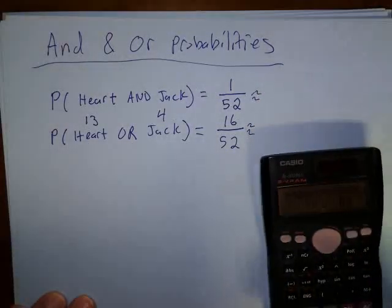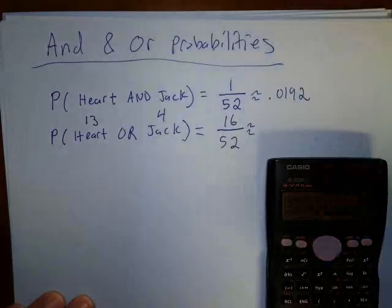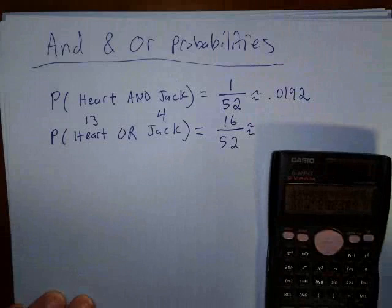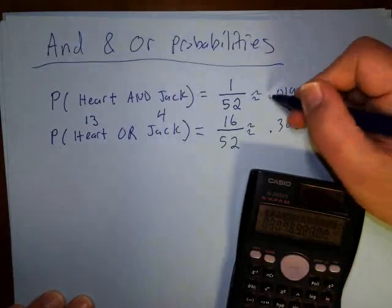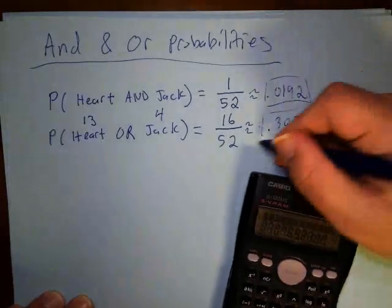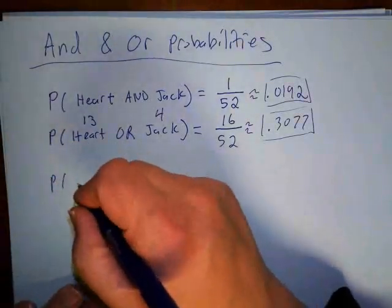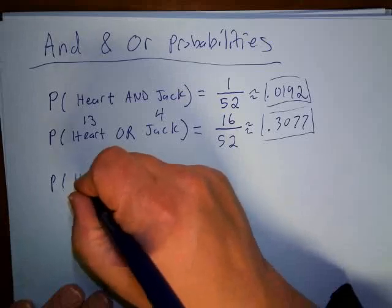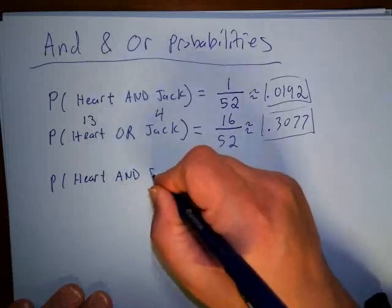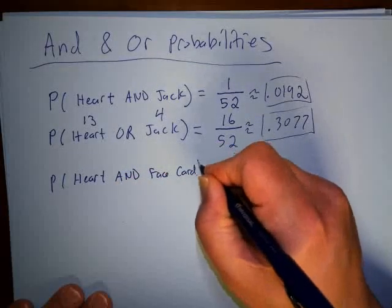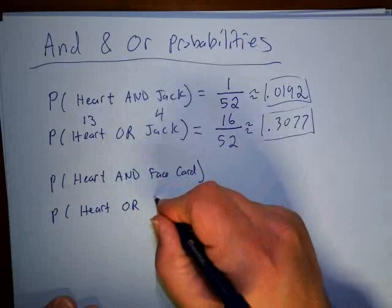So 1 divided by 52 is approximately 0.0192, and 16 out of 52 is approximately 0.3077. Let me do one more example with playing cards: what's the probability of drawing a heart AND a face card, and separately, a heart OR a face card?